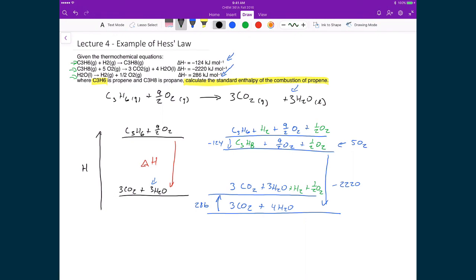So if I were to calculate the change in enthalpy for this system, then all that is is just the change in enthalpy in the first reaction plus the change in enthalpy in the second reaction plus the change in enthalpy of the third reaction. And so in that case, that's just going to be -124 plus -2,220 plus 286. And what that leaves me with is negative 2,058 kilojoules per mole.